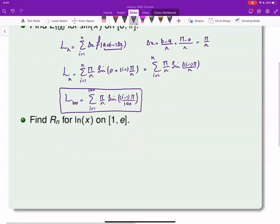Here we are looking for right endpoint. So right endpoint is sum of delta X, F of A plus i delta X. So this is something that you have to keep in mind. Delta X is B minus A over N, which is e minus 1 over N. This is A, this is B.